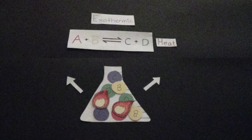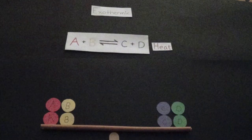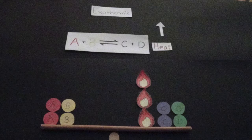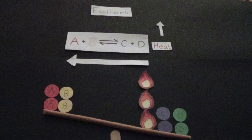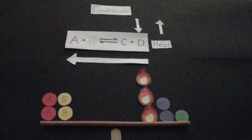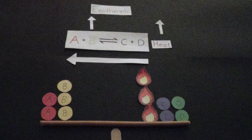An exothermic reaction has heat as a product. If temperature is increased, then the reaction will shift to the left in order to re-establish equilibrium. Equilibrium can be re-established by decreasing the concentrations of products C or D, or decreasing the concentrations of reactants A or B.